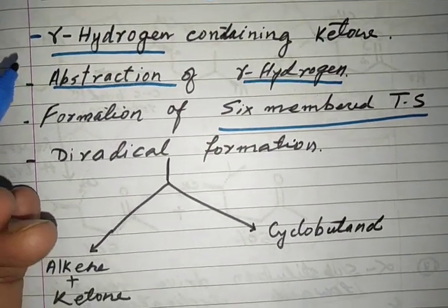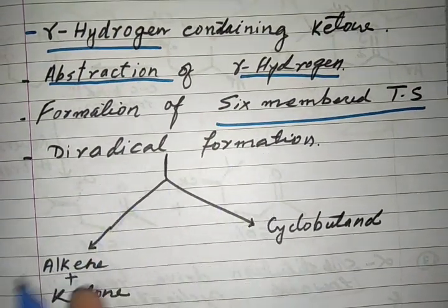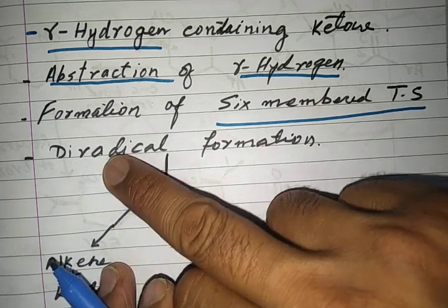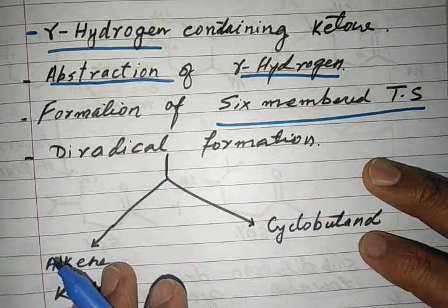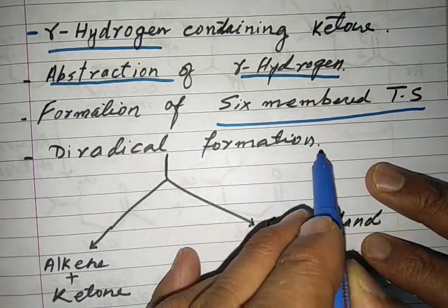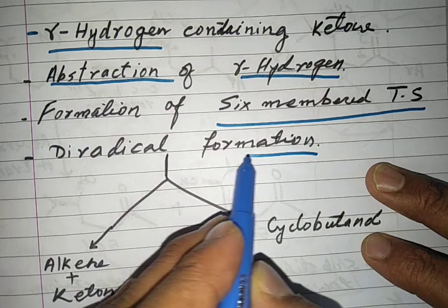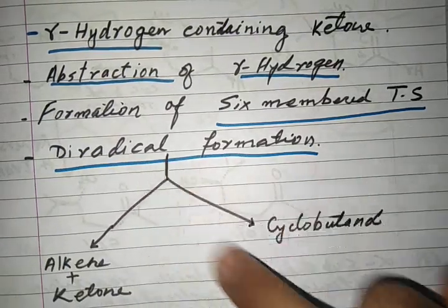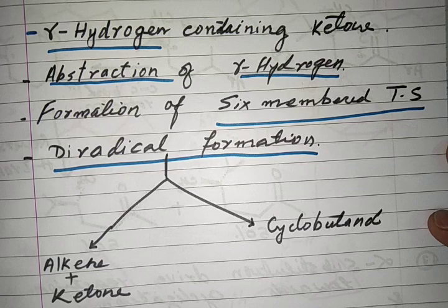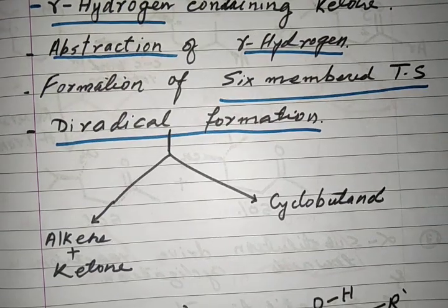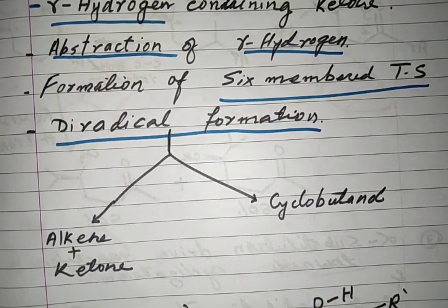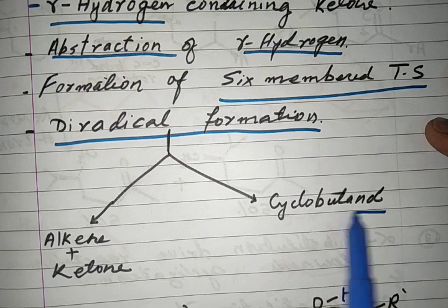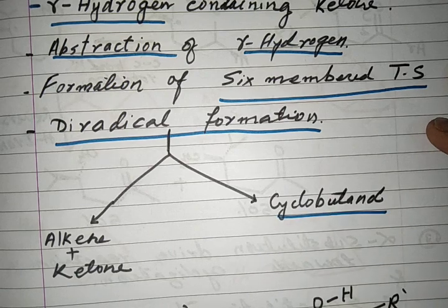This is a very important and good reaction. The most important point to remember is that there is formation of a 1,4-diradical. Once this diradical is formed in the Norrish Type 2 reaction, it has two pathways to proceed to products. One of them causes formation of cyclobutanol.